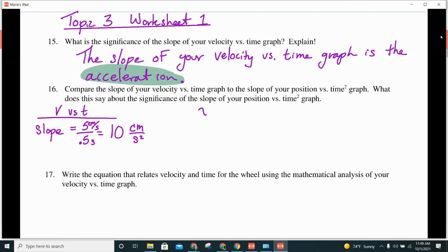And what about the slope for my position versus time squared graph? 5 over 1. 5 over 1. Cool. So, that's just 5.